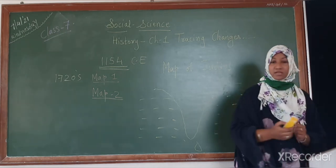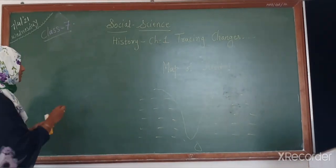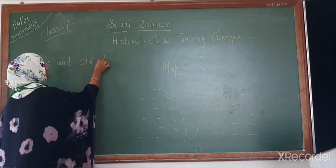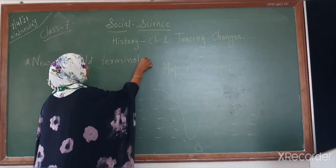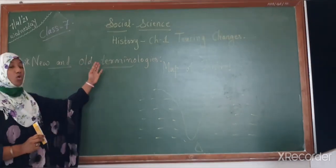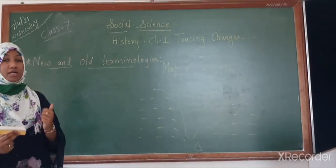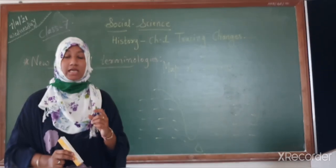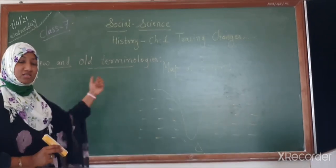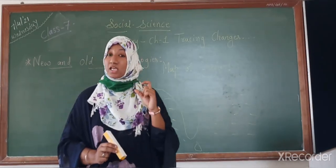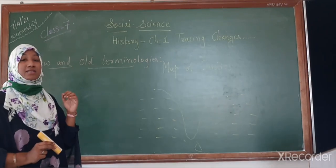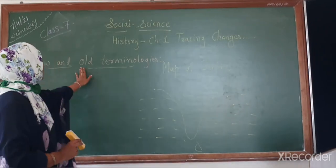Now let me proceed with another topic: new and old terminologies. What we are going to discuss here is which old things have changed in the modern generation. For example, take the name Hindustan. Before, a century ago, our country was named Hindustan — it was the Persian language ruling at that time and the country was given the term Hindustan. That is the old terminology.